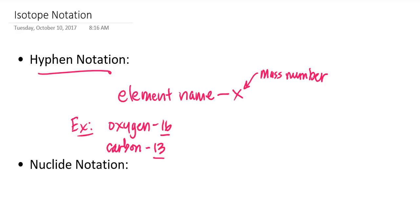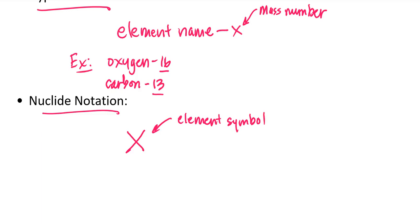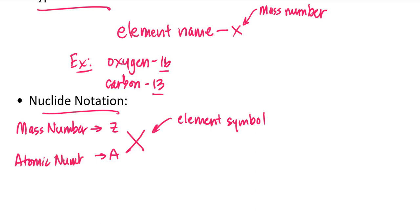Another way we can refer to isotopes is by using nuclide notation. The format is a little bit different but more informative. In nuclide notation, I use the element symbol from the periodic table for the nucleus of the isotope, then put two numbers on the left-hand side of the symbol — one in the upper left and one in the lower left. The number in the upper left is the mass number, and the number in the lower left is the atomic number.